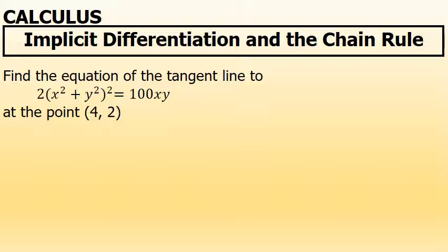To find the equation of the tangent line, we'll first have to find the slope of the tangent line, which requires the derivative with respect to x. This equation has factors of y, and when I differentiate those factors, implicit differentiation will be required. And when I take the derivative of this part of the equation — it involves a quantity to a power — the chain rule will be required.